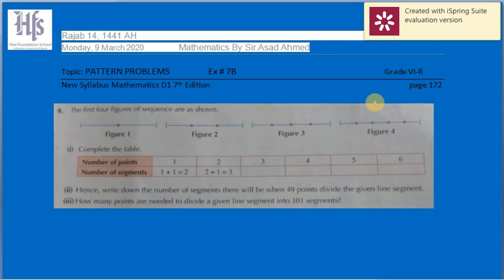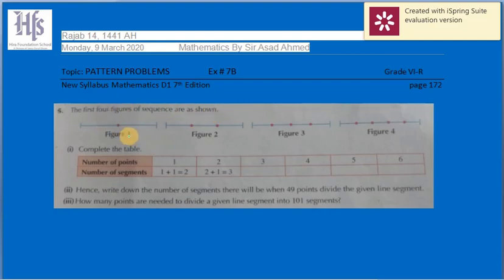In this exercise 7b, question number 5, the first four figures of the sequence are shown. There are four figures: figure one, figure two, figure three, and figure four.